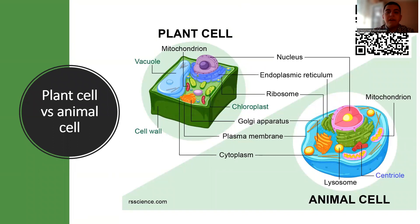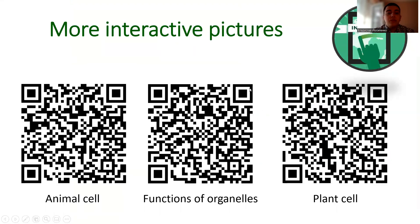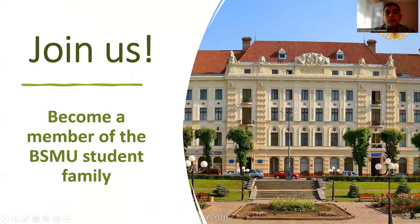Most cells have similar structures but also some differences. Comparing plant and animal cells: plant cells have a large central vacuole, plastids such as chloroplasts, and a cell wall. Animal cells have no vacuole, cell wall, or chloroplasts, but they do possess a centrosome with two centrioles. At the end of the lecture, I would like to share more interactive pictures for better exam preparation — scan the QR code on the slide to access them. Thank you for your attention. Join us and become a member of the BSMU student family.